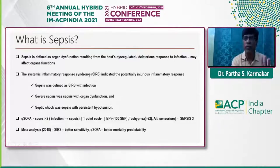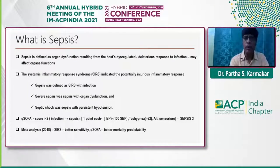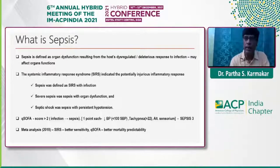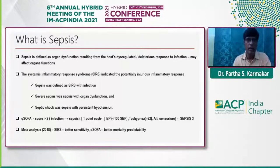SIRS is diagnosed by four important factors: pulse, respiration, temperature, and WBC count below 4,000 or above 12,000. If any two of these four criteria are present, we call it that infection has converted into sepsis. Severe sepsis is considered when there is organ dysfunction, and septic shock is called when fluid-unresponsive hypotension is found along with sepsis.